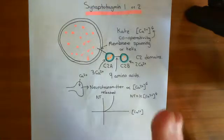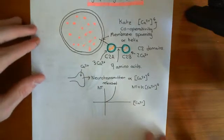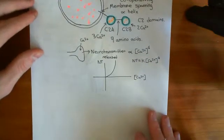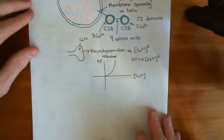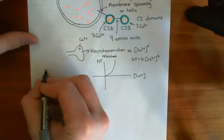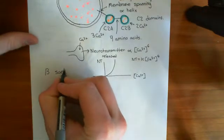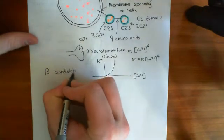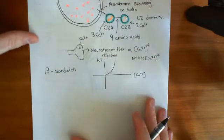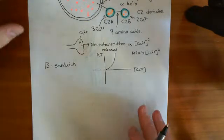So, what we want to discuss next is the C2 domains. What is a C2 domain? A C2 domain is a type of protein domain capable of binding to calcium. It is what is known as a beta-sandwich. In order to explain what a beta-sandwich is, we first need to discuss what a beta-pleated sheet is from molecular biology.